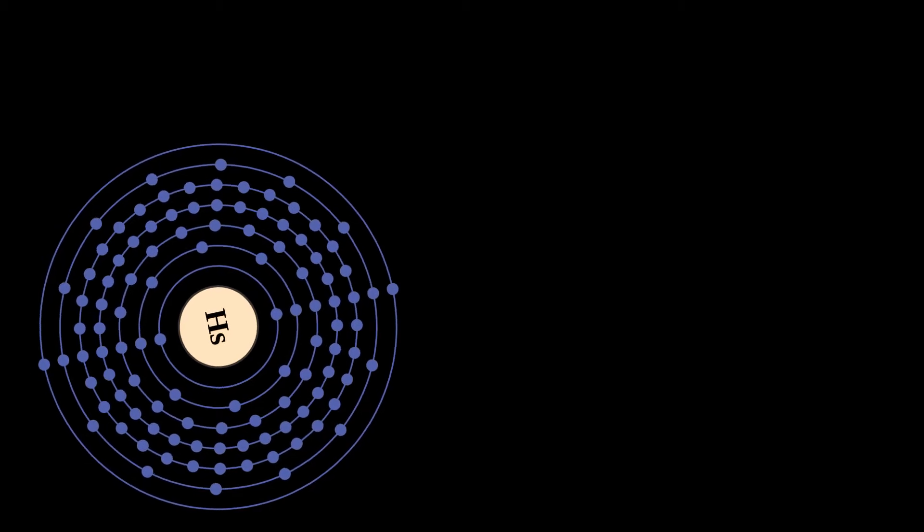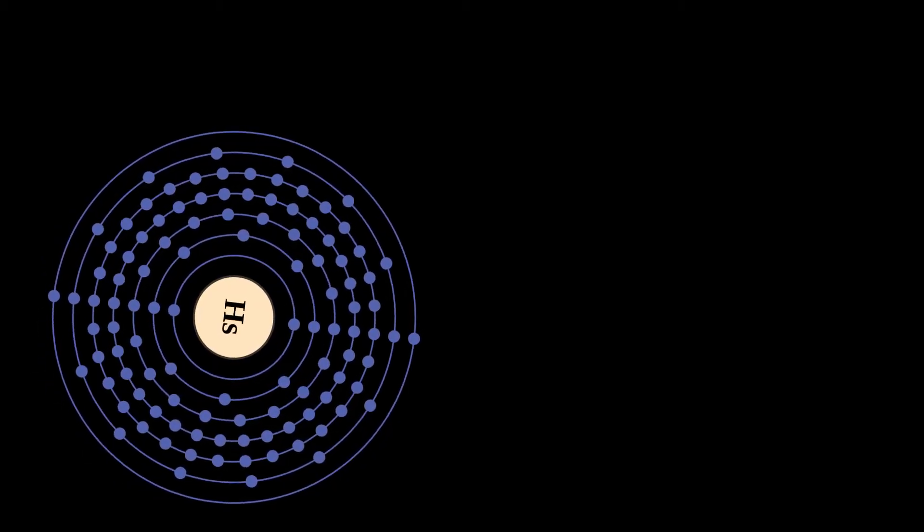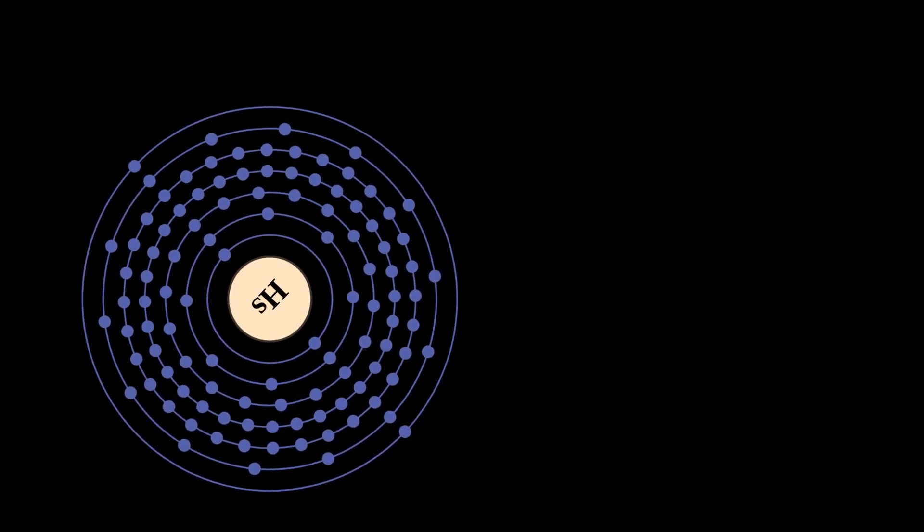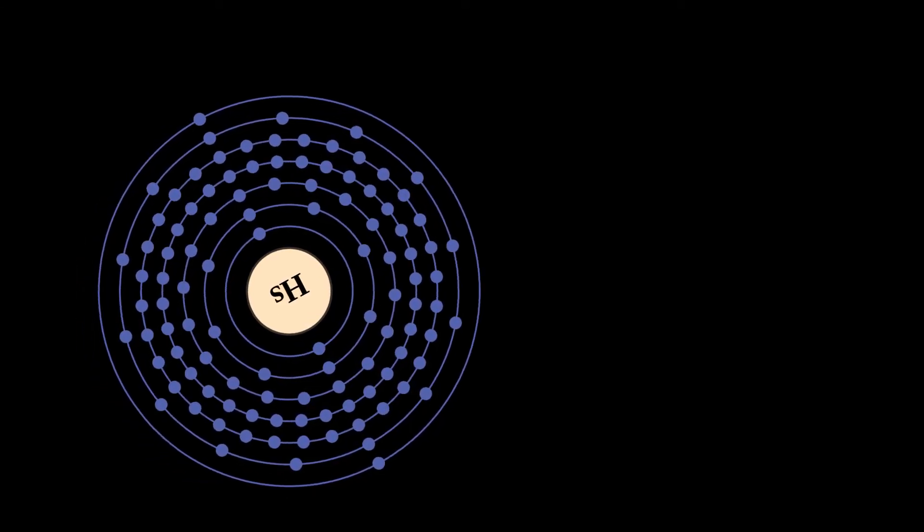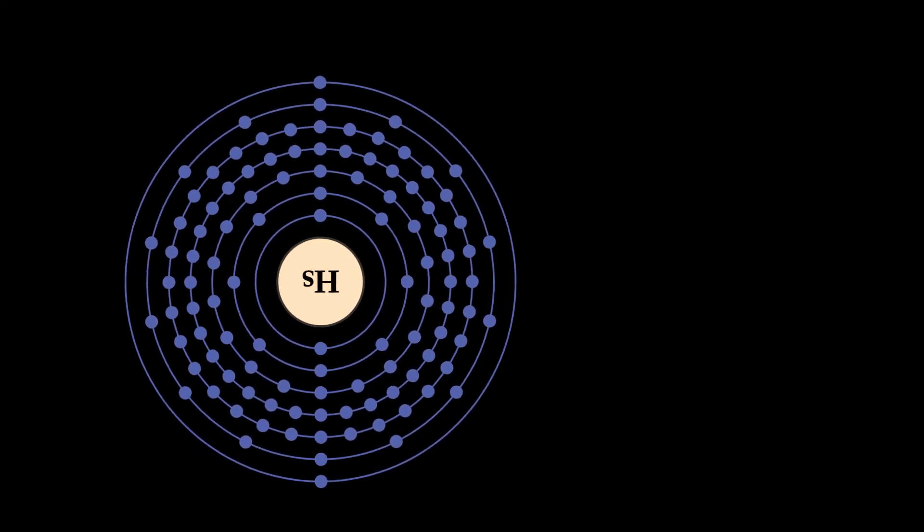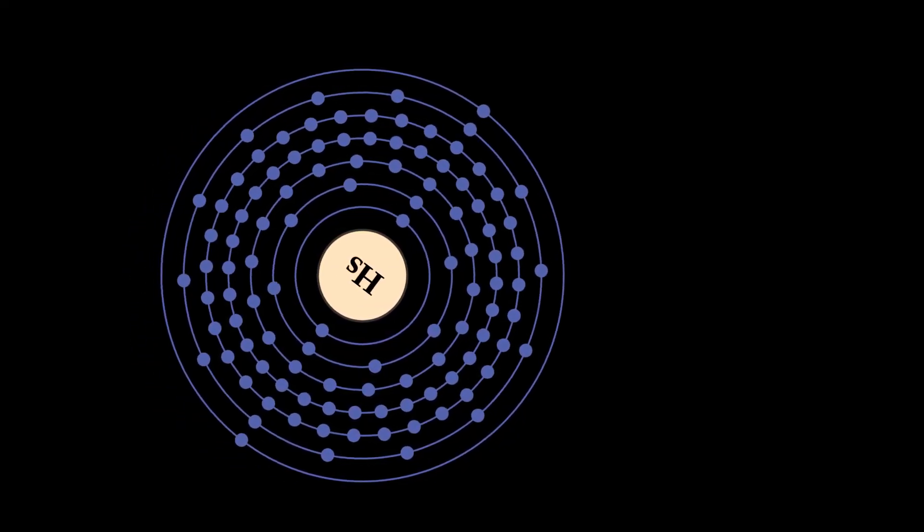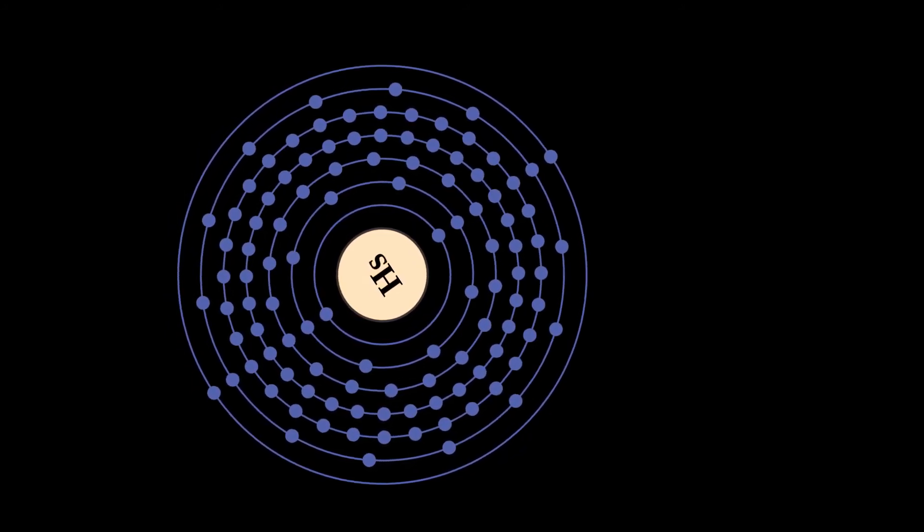This does not rule out the possibility of unknown longer-lived isotopes or nuclear isomers existing, some of which could still exist in trace quantities today if they are long-lived enough. In the early 1960s, it was predicted that long-lived deformed isomers of Hassium might occur naturally on Earth in trace quantities.